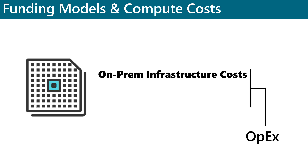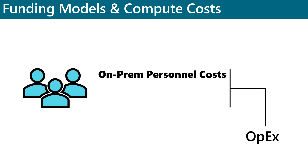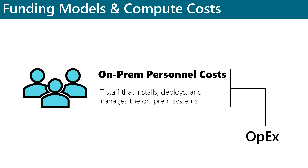Infrastructure costs associated with the data center, like electricity, floor space, and even cooling, are also generally considered OPEX expenses. Personnel — the IT staff that you use to install, deploy, and manage all this is considered an OPEX cost.